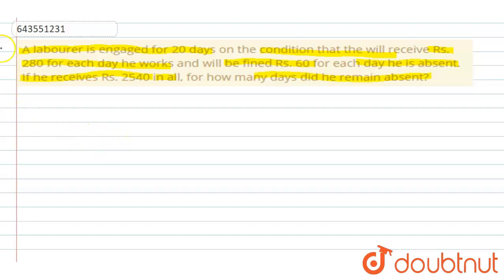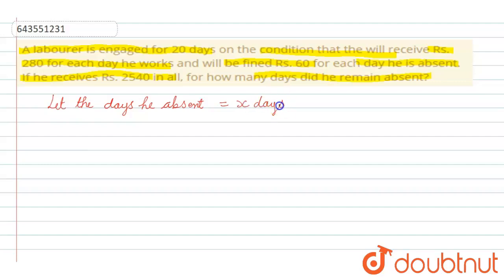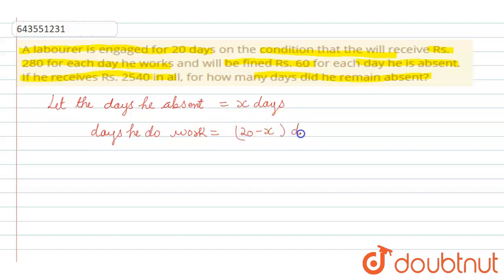For how many days did he remain absent? Let the days he was absent be x days. So the days he worked will be equal to 20 minus x days.